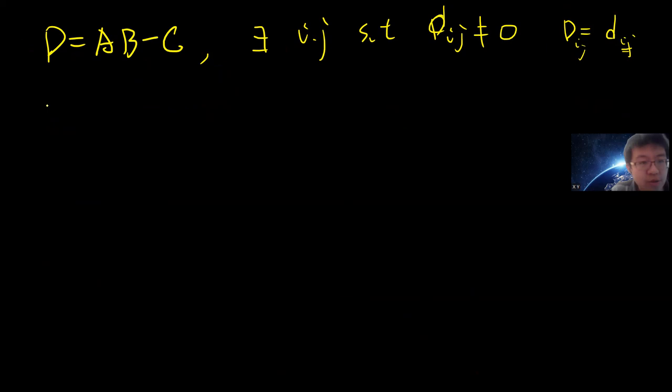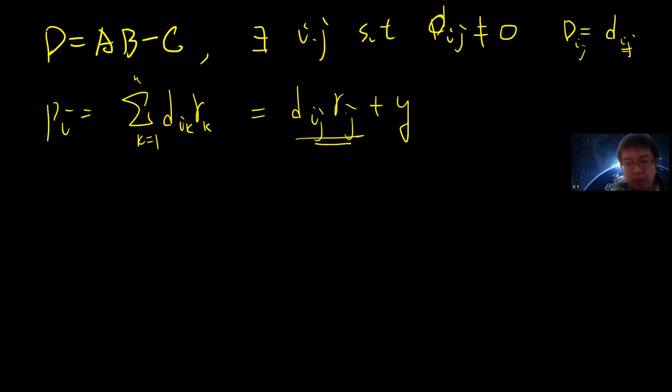So now our P_i will be summation of D_ik R_k from k=1 to n. So this is a vector. And then I can write as D_ij R_j plus y, where y is the rest. So I pick out one term and the rest I call it y. So I want to ask what is the probability that P_i equals 0.